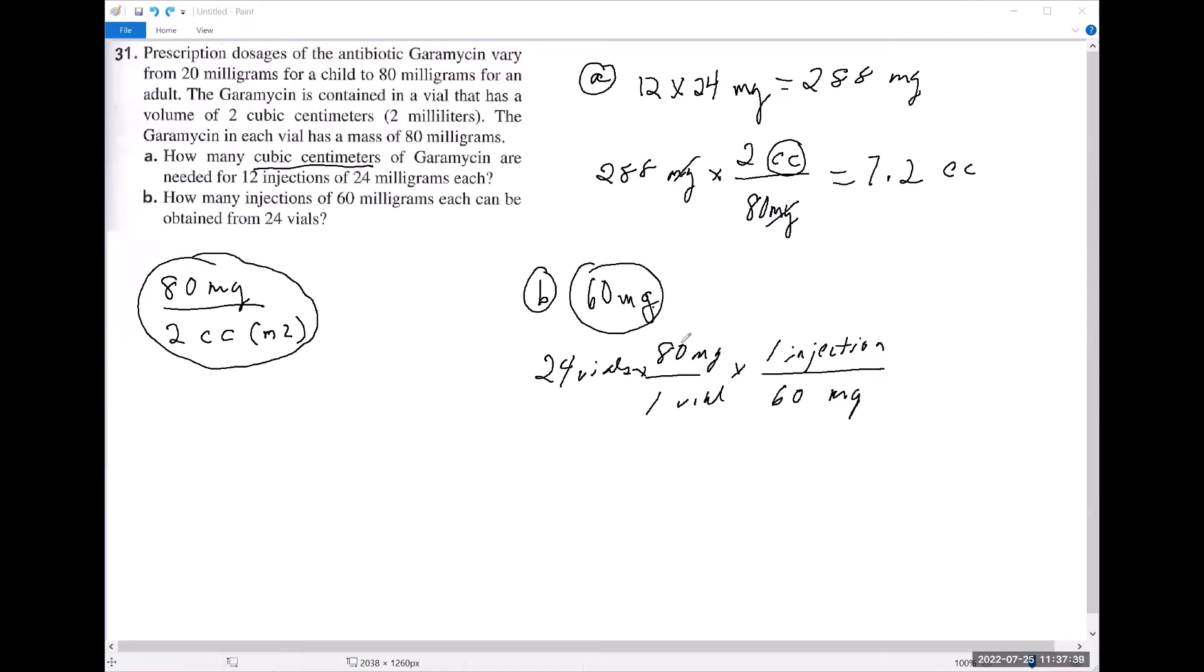So this is 1,920 milligrams of Garamycin. And if I divide that now by the 60 milligrams per injection, the answer is 32 injections. I'm just going to put 'inj' for injections.